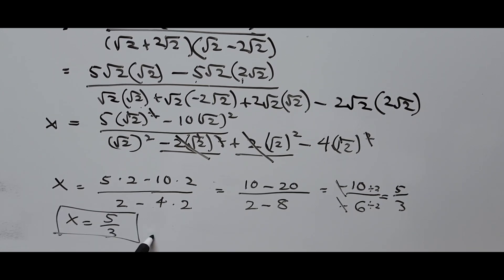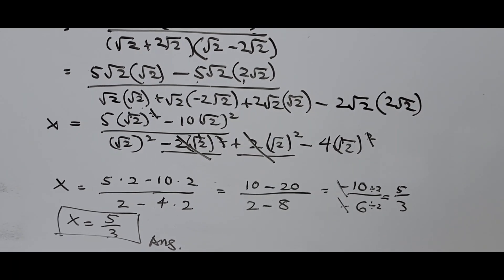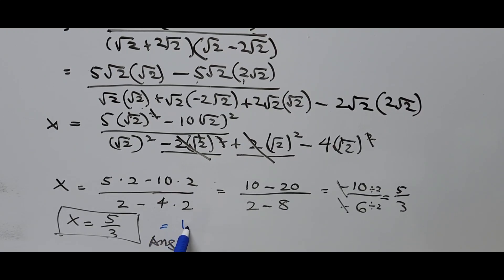So that's the answer: the value of x is equal to 5 thirds. Now if we would like to verify our answer, we substitute the value of x back into the original equation, or we can get the decimal value and compare. The decimal value of 5 thirds is 1.666, and this is a repeating number — so that's our target.